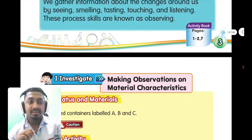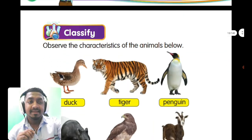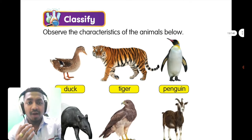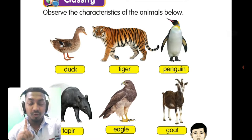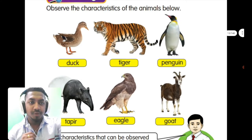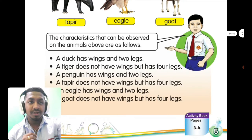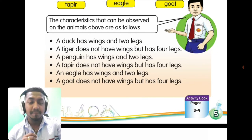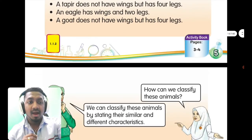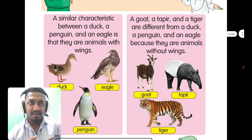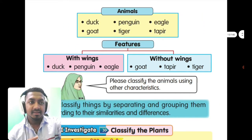Scientific skill number two is classification. How do we classify things? First you have to observe, then you can classify. You can observe the number of legs and the presence of wings — whether the animal has wings or not. After that, you list down the characteristics, and based on those characteristics you can classify.